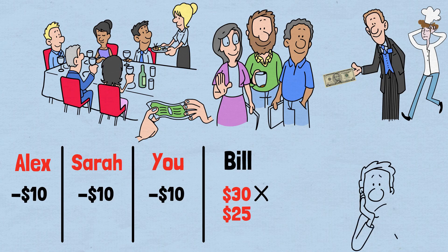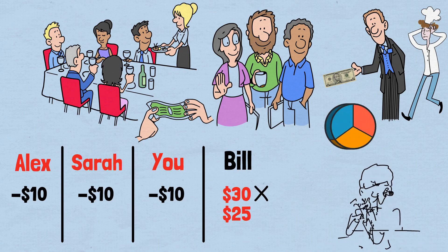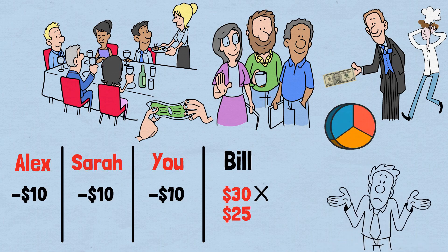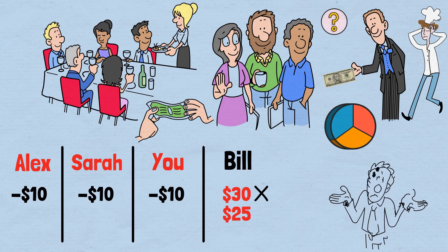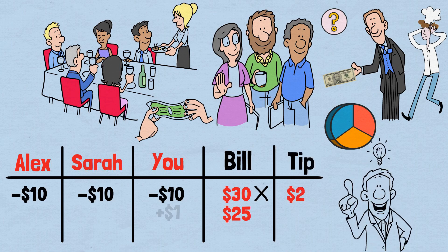The busboy, however, faces a mathematical dilemma: how do you divide $5 equally among three people? He can't figure out a clean way to split it, and frankly, you don't even know about the billing error in the first place. So he makes a practical decision — he pockets $2 as a tip for his trouble and gives each of you $1 back.